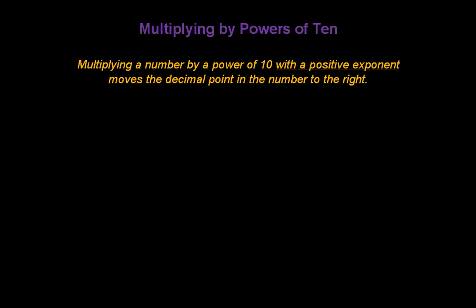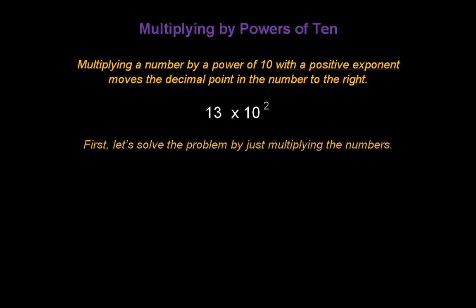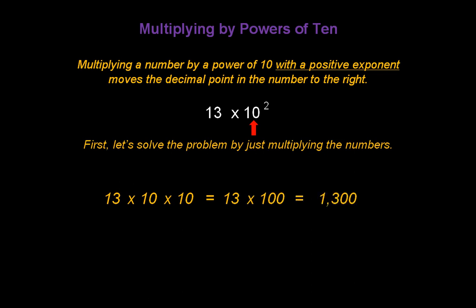Multiplying a number by a power of 10 with a positive exponent moves the decimal point in the number to the right. Let's take this problem: 13 times 10 to the second power. First, let's solve the problem by just multiplying the numbers, then we'll do it by moving the decimal point around. Take the 13, multiply it by 10 to the second power, which is 10 times 10. Simplify the problem to 13 times 100. Multiply those two factors together and the answer is 1,300.